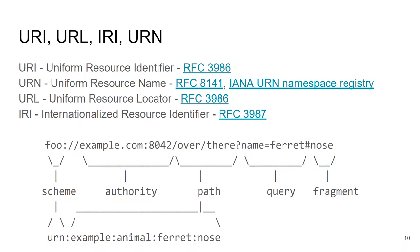A URN is a special URI with the 'urn' scheme. URLs and IRIs in the authority part use domain names, so they are somehow related to the owner or location of that resource. URNs are specifically designed to be location-independent. They use the 'urn' scheme; the first part after 'urn' can be registered in the IANA URN namespace registry, making it yours, and then you can structure the rest of the URN as you wish. Best practice is to use semicolons or colons to separate individual parts. So now it should be clear what a URI, IRI, URL, and URN are.